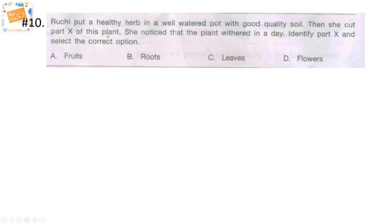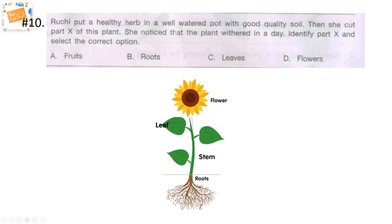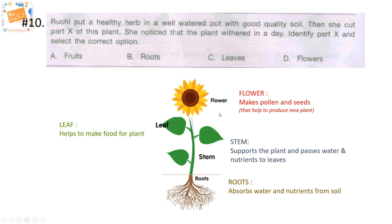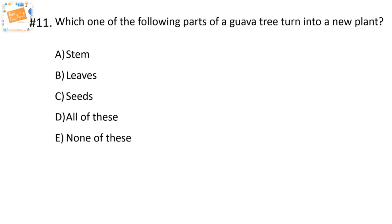Question 10: Ruchi put a healthy herb in a well-watered pot with good quality soil, then she cut part X of this plant. She noticed that the plant withered in a day. Identify part X. Options: A — fruits, B — roots, C — leaves, D — flowers. Revisiting functions: roots absorb water and nutrients from the soil and give them to the plant; the stem supports the plant and passes water and nutrients to leaves; leaves make food for the plant; flowers make pollen and seeds. Clearly, roots provide energy, water, and nutrients for the plant to grow and survive. The answer is option B — roots.